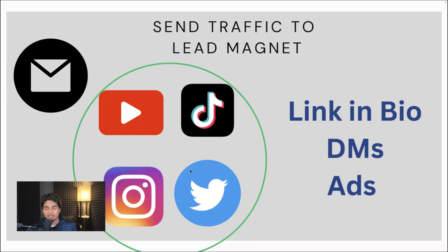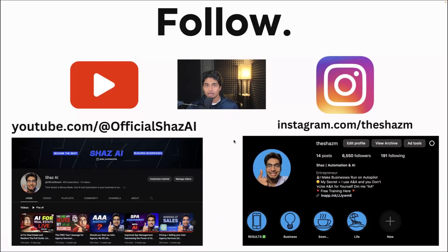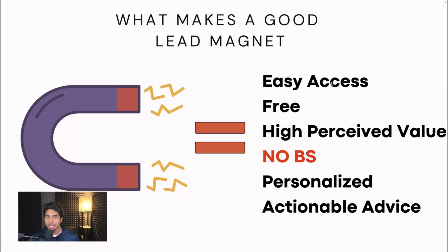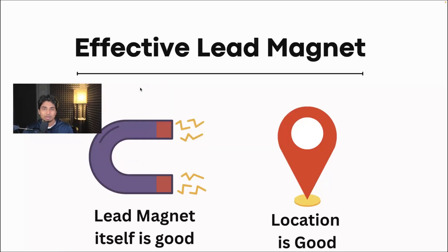The best practices for a lead magnet and how you actually attract cash from those contacts you collect — this is where the free AI-built lead magnet comes into play. One of the best use cases is it can be placed on any social media: YouTube, TikTok, Instagram, Twitter, even email. Link in bios, DMs, ads to a lead magnet — it's a very powerful marketing tool if pulled off right. What makes a good lead magnet: it's easy access, it's free, there's high perceived value — all value, no fluff, and it's personalized. You can boil it down to two things: one, the lead magnet itself is good and valuable; two, the location is good — it's in your bio or description with a large following. Nail those two things and you'll generate money.